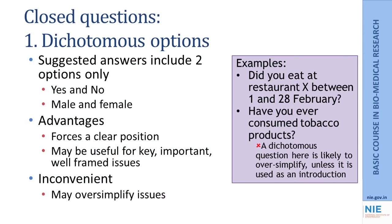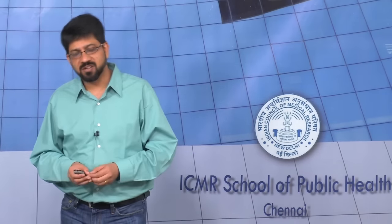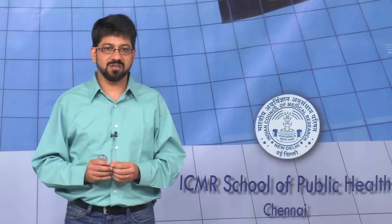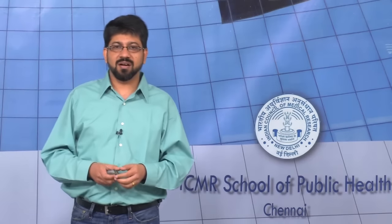Closed questions are the ones where you have a set category of answers — only those that are acceptable to the investigator. These could be two types. You could have dichotomous options such as yes/no or male/female. These kind of questions force a clear position for the respondent and are very useful to get key information for important issues. Although sometimes, depending on the question, it may oversimplify issues where a yes/no answer does not give very good information.